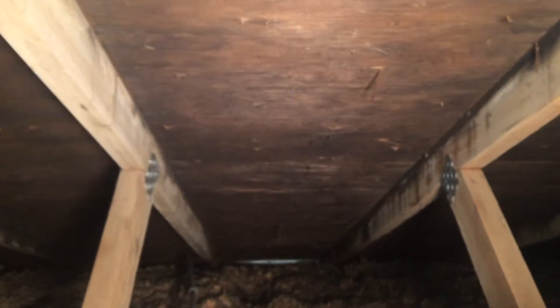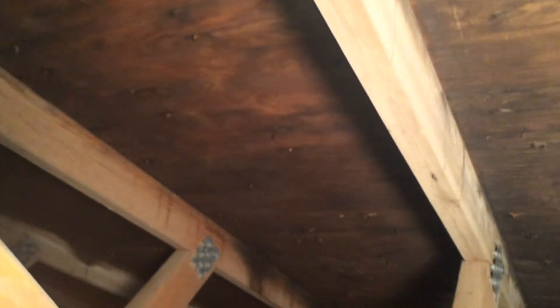As you can see, they're two-by-fours that are held together with steel plates. The mold has developed on both the sheeting and the rafters as a result of poor ventilation and insufficient insulation.